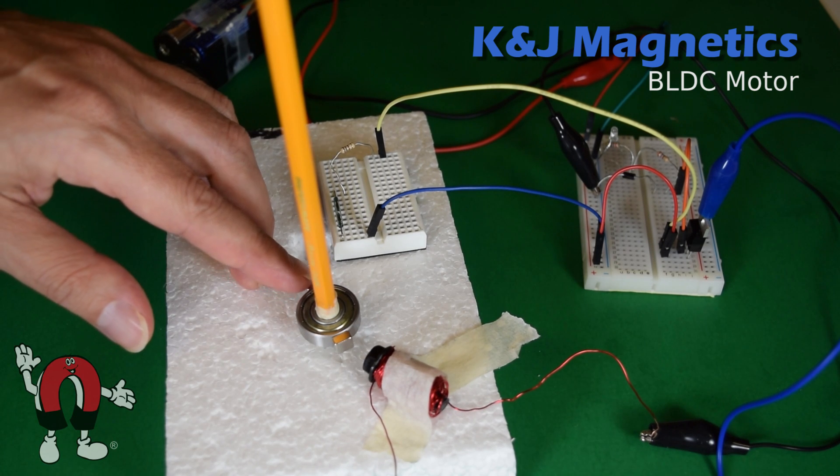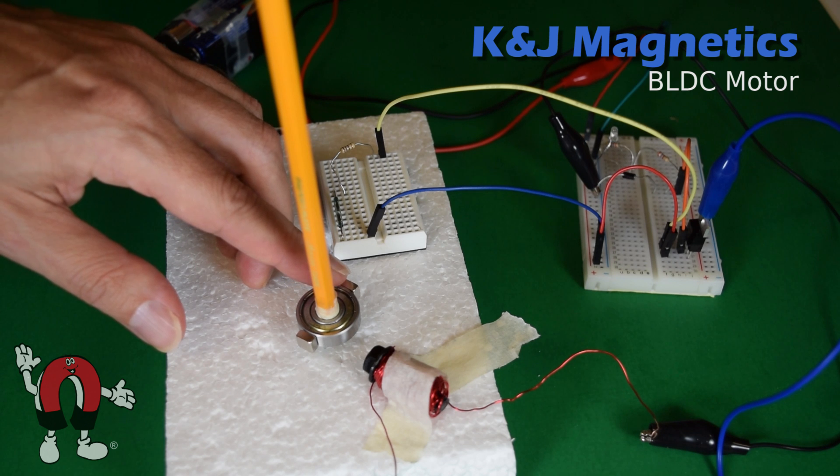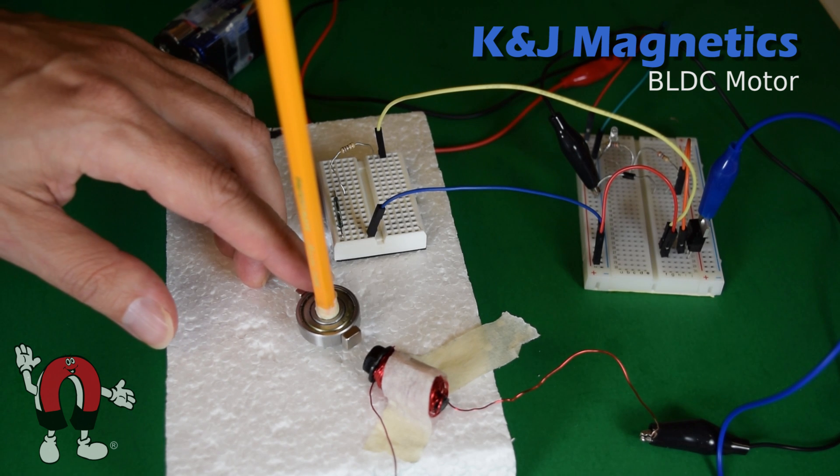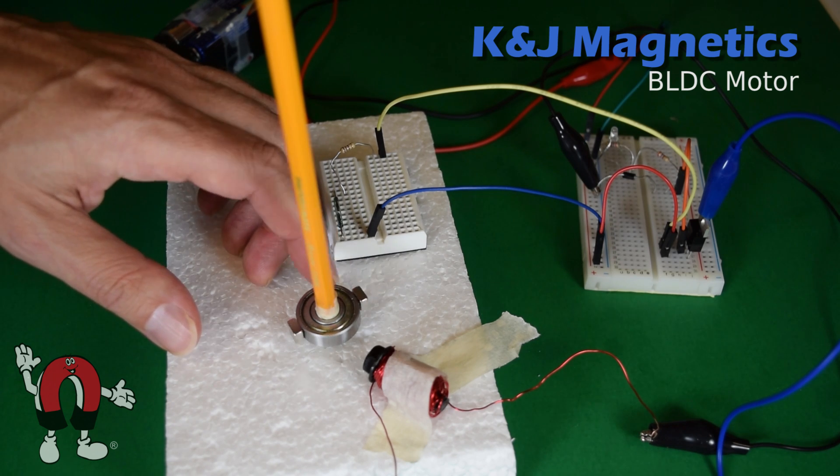Ideally, when the magnet passes by the reed switch, it should turn the electromagnet on and give that magnet a little bit of a push. If it does this each time the magnet passes by, we should be able to make it spin.